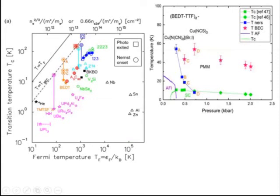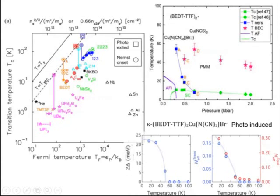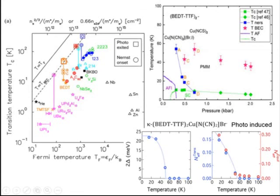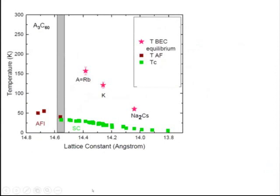The most recent results from Cavalleri's group place the onset of the photo-excited effect very close to the Nernst onset temperature for BEDT. They also have unpublished results showing that this effect dies away as you move toward the overdoped material — very similar to the behavior of the Nernst effect. The photo-excitation onset puts a point on this hypothetical dotted BEC line.